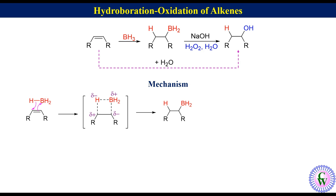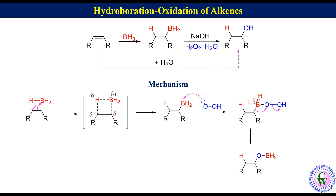The anion generated from the reaction of sodium hydroxide and hydrogen peroxide donates an electron pair to boron to produce an adduct, which undergoes alkyl migration to produce alkoxy borane and a hydroxide ion. Transfer of an electron pair from hydroxide ion to boron of alkoxy borane gives an alkoxy hydroxide ion, which undergoes hydrolysis to produce alcohol.